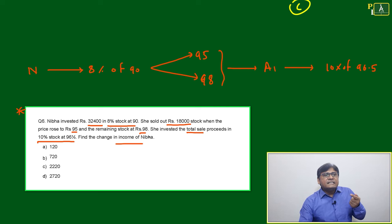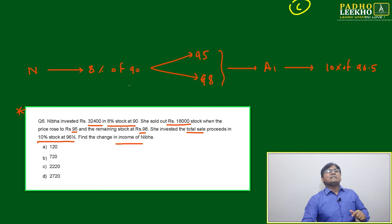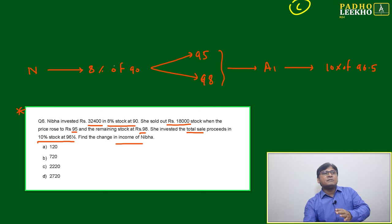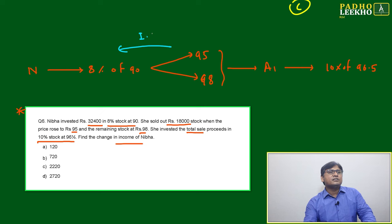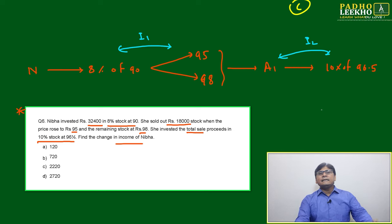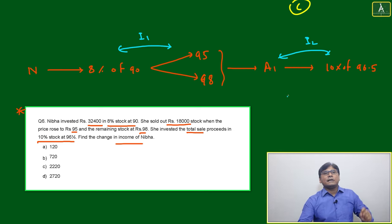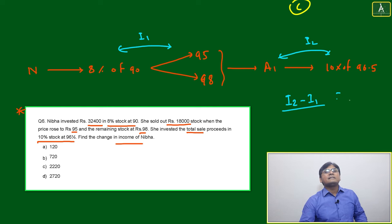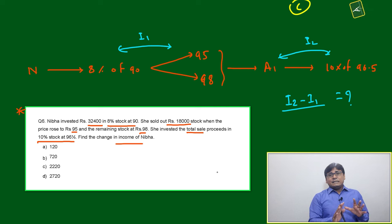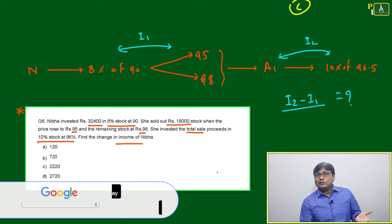The question asks to find the change in income of Niva. Earlier she earned some income (I1) from the initial investment, and from the reinvestment she gets income (I2). The question is not asking to calculate only I1 and I2 separately — it asks for the change in income, meaning the value of I2 minus I1.